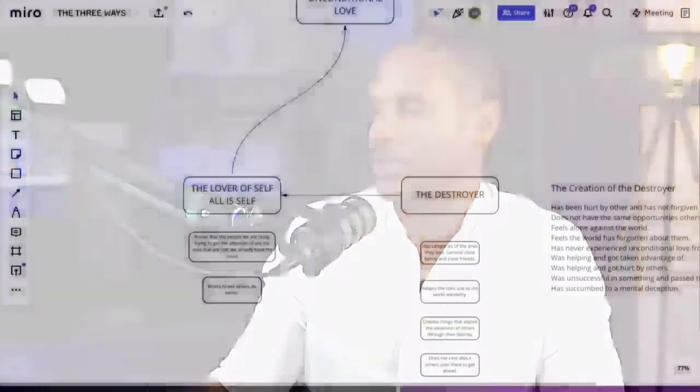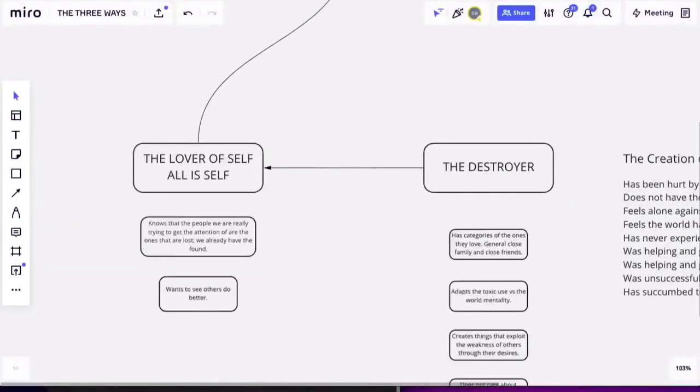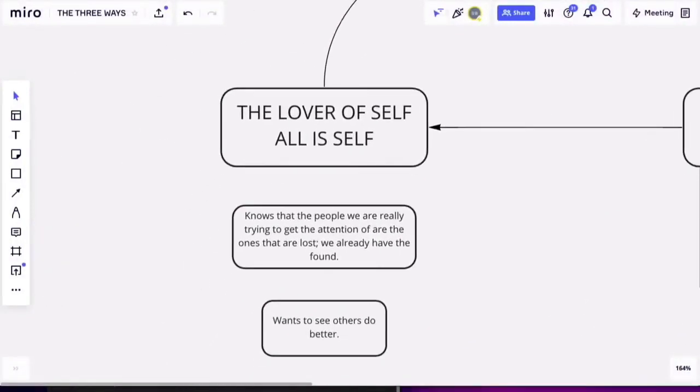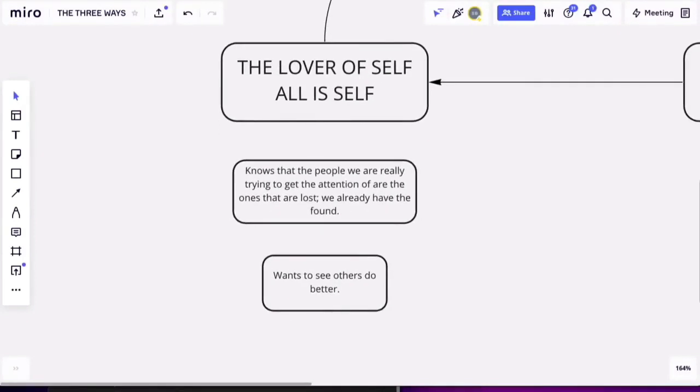This position is called the lover of self. The lover of self because they've realized that all is self. This is the being that really wants to help as many people as possible because when it's crystallized, they realize this one key fundamental: the people that we're really trying to get the attention of are the ones that are lost. We already have those that are found. Let me slow this down and bring all this into retrospect.